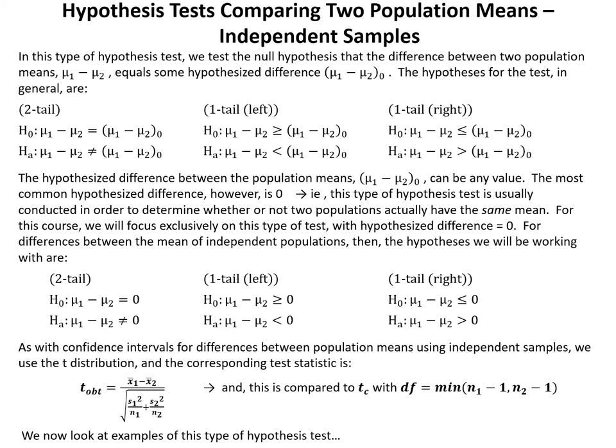The hypothesized difference between the population means can be any value. The most common hypothesized difference, however, is zero. This type of hypothesis test is usually conducted in order to determine whether or not two populations actually have the same mean. For this course, we will focus exclusively on this type of test with the hypothesized difference equal to zero.